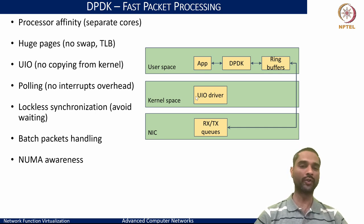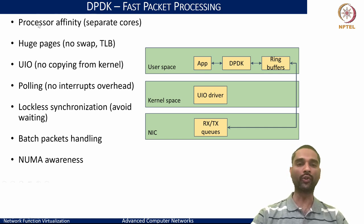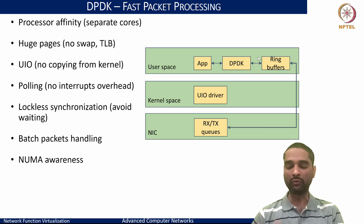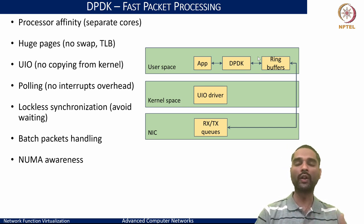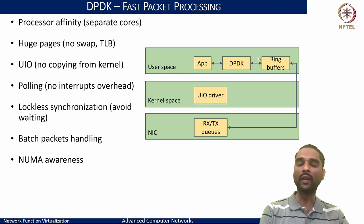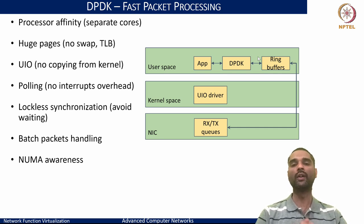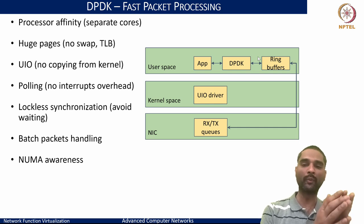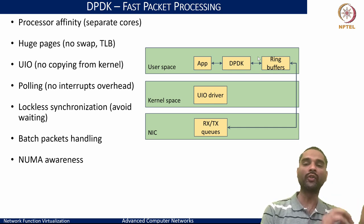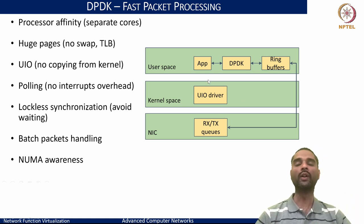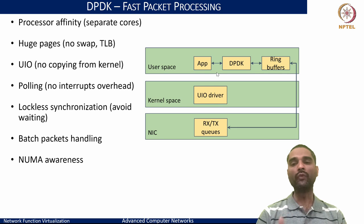DPDK also incorporates processor affinity and NUMA awareness. On multi-socket or multi-core systems, memory access latency varies by region. A network function running on socket 0 should have its NIC tied to the same NUMA node so that memory access between the application and the NIC is cheaper and cache-efficient.